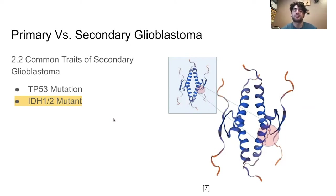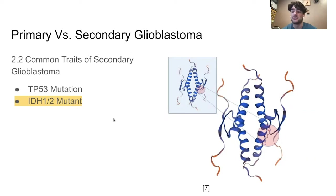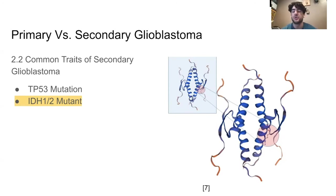Secondary glioblastomas share a couple of common traits. The first is the TP53 mutation — the gene coding for the P53 tumor suppressor protein — where a loss-of-function mutation inactivates tumor-preventative mechanisms and contributes to cancer in a variety of ways. Importantly, secondary glioblastomas carry the mutated version of IDH1 and IDH2. While how exactly the mutation contributes to development is not yet established, it does not increase cell proliferation, which is consistent with the slow, multi-year development of secondary glioblastomas.